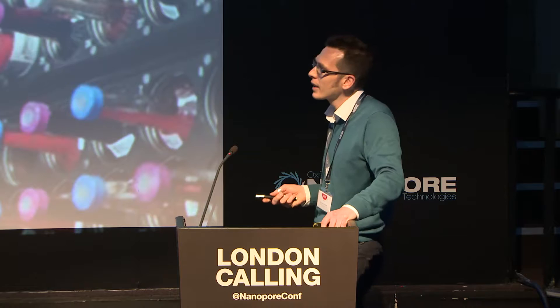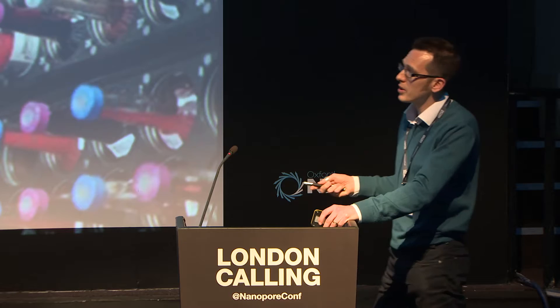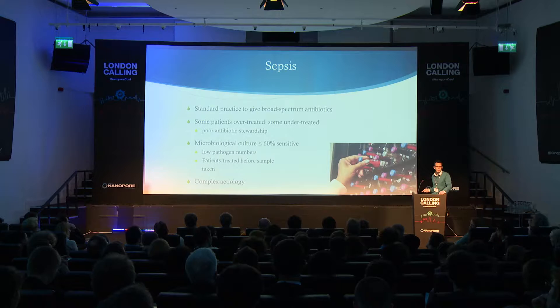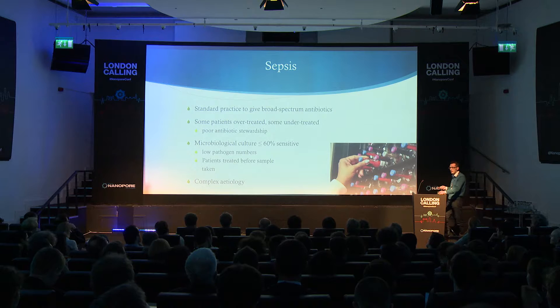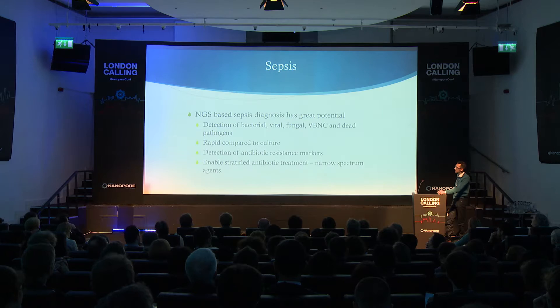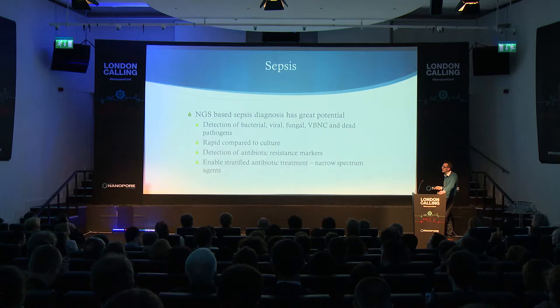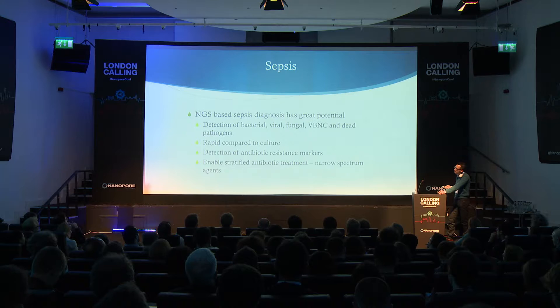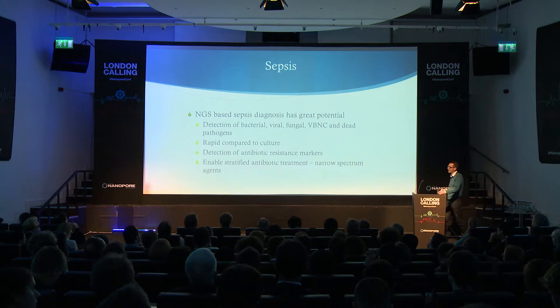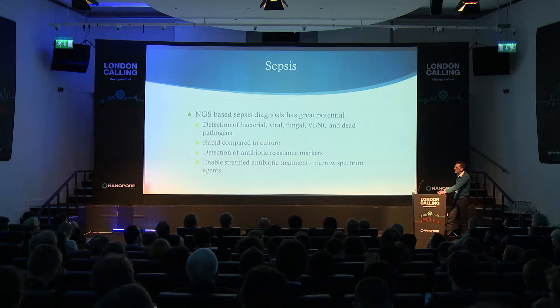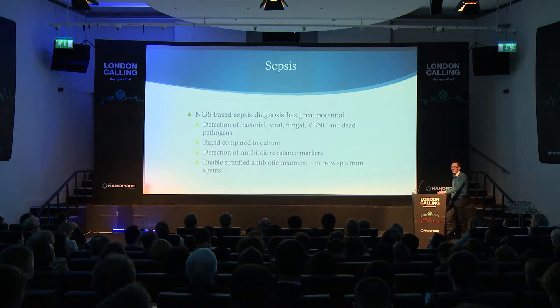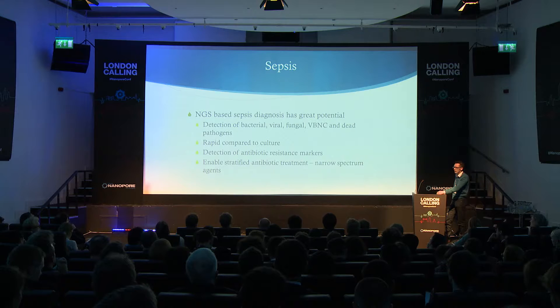Microbiological culture is less than 60% sensitive, because there are very low pathogen numbers in the blood — maybe only one to ten per millilitre in a septic patient — and because patients are often treated before a sample is taken. There's also a complex etiology of this disease that makes it very difficult for PCR to diagnose, which is why next generation sequencing is particularly applicable. NGS has great potential because it can detect bacterial, viral, fungal, viable but non-culturable, and dead pathogens. It's rapid compared to culture, can detect antibiotic resistance markers, and will enable stratified antibiotic treatment using narrow spectrum agents.